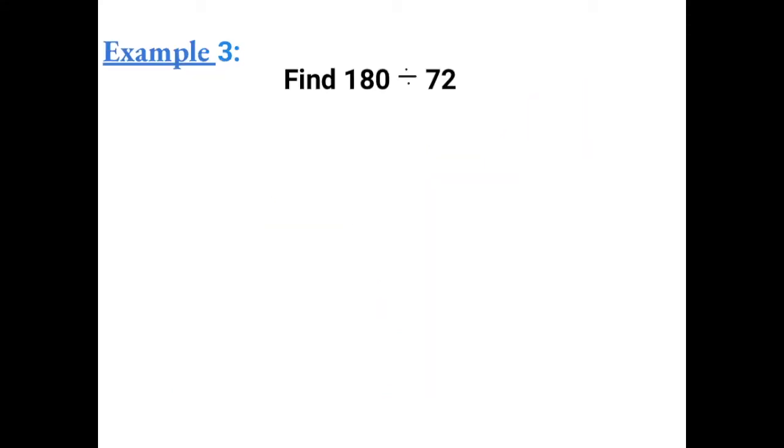Example 3: Find 180 divided by 72. So 180 is going to go under the division bar. So 72 doesn't go into 1. It doesn't go into 18. So we need to see how many times it goes into 180. So 72 will fit into 180 two times.